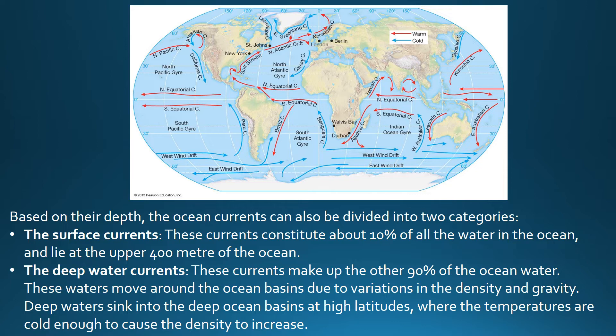Based on their depth, ocean currents can also be divided into two categories. Surface currents constitute about 10 percent of all the water in the ocean and lie in the upper 400 meters. Deep water currents make up the other 90 percent of ocean water. These waters move around the ocean basins due to variations in density and gravity, sinking into the deep ocean basins at high latitudes where temperatures are cold enough to cause the density to increase.